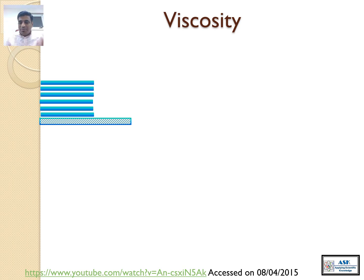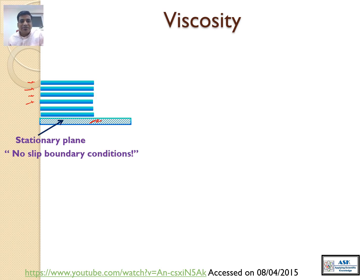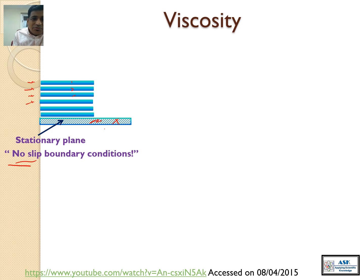Now let's assume that we have these liquid plates — another analogy would be a deck of cards, where the cards are in parallel direction. We have one assumption: the bottom layer is not going to move; it will remain stationary. It has no-slip boundary conditions, meaning it will not move at all. That's not the case with the other liquid plates — like liquid plates 1, 2, 3, 4, 5, 6.